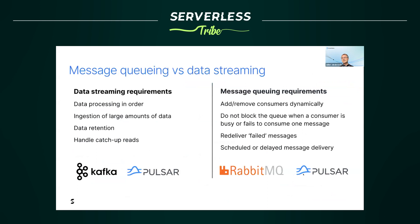Data streaming and messaging require a different set of features. Streaming requirements include processing data in order, data retention, and handling catch-up reads — Kafka and Pulsar do that well. Message queuing requirements are different: you need to add or remove consumers dynamically, not block the queue when a consumer is busy, re-deliver failed messages, and support scheduled or delayed message delivery.